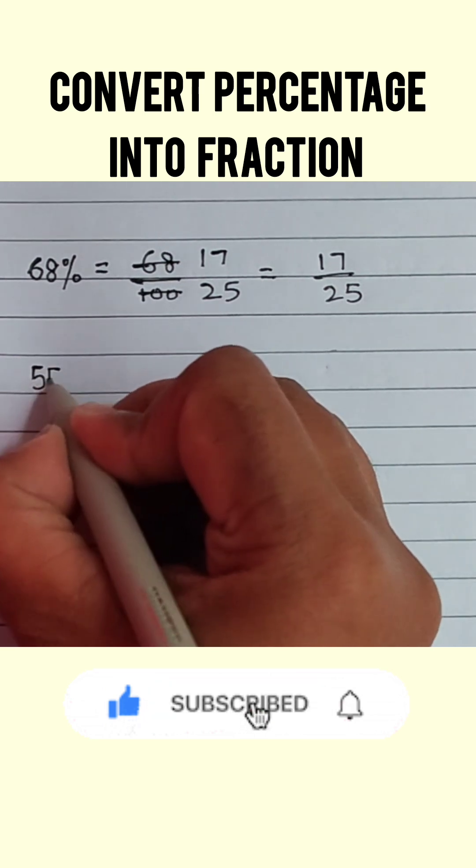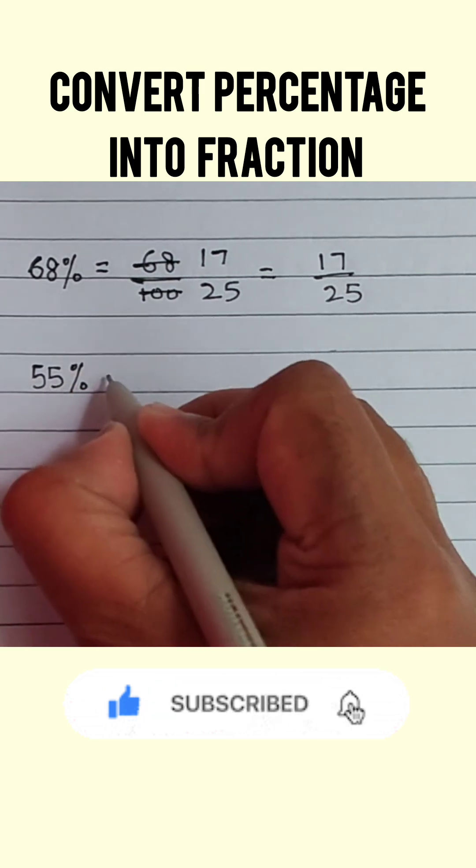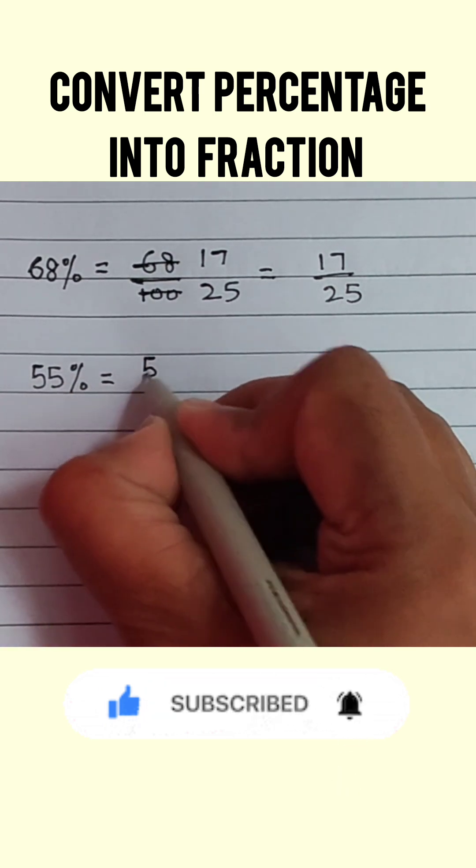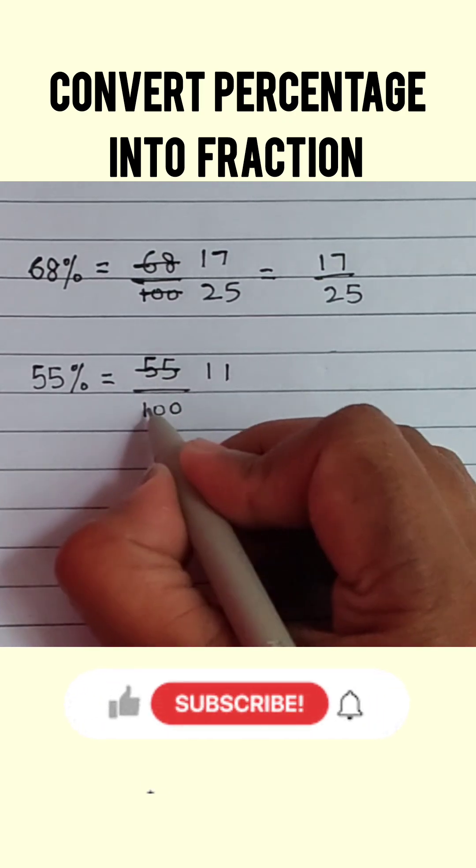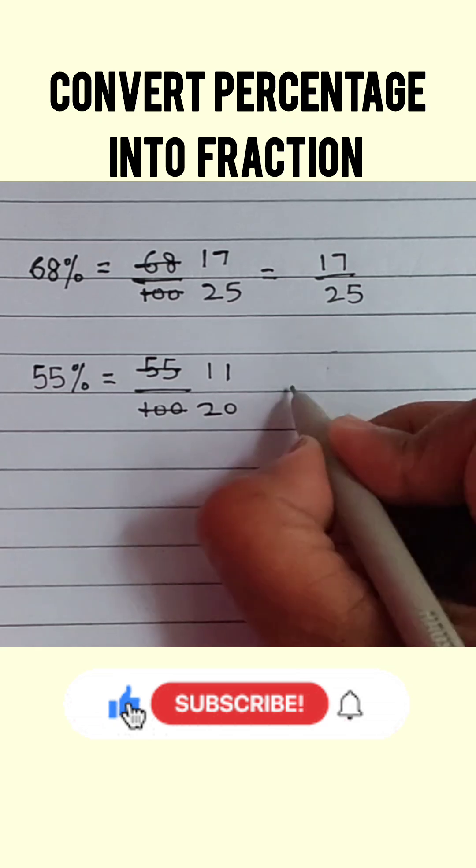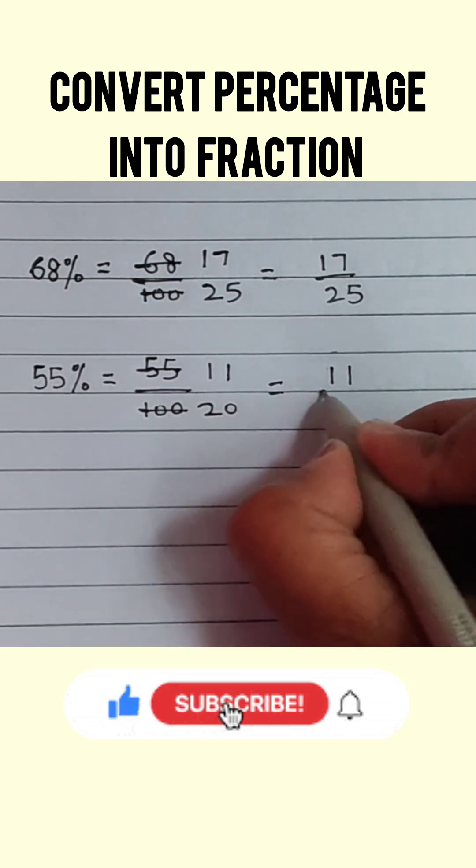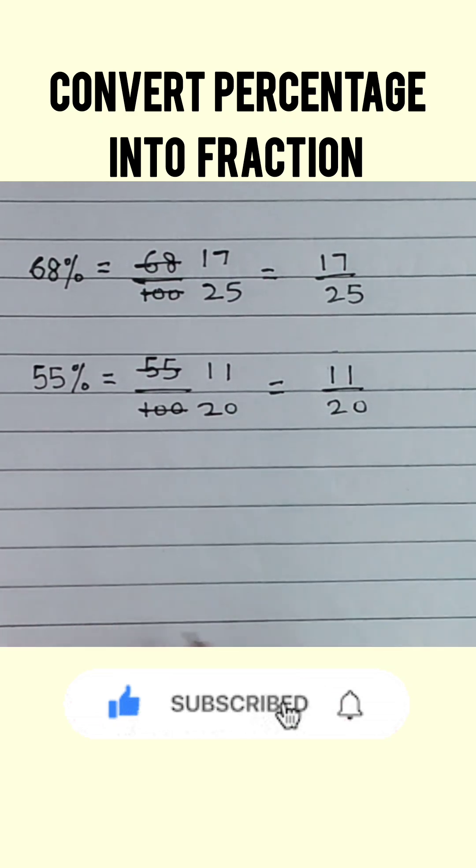Next we will take 55%. Now 55 upon 100. We will divide numerator and denominator both by 5. So 55 will become 11 and 100 will become 20. That means 55% is 11 upon 20.